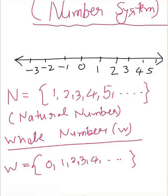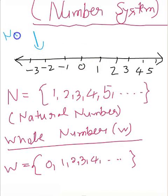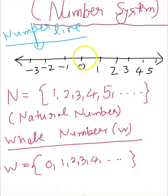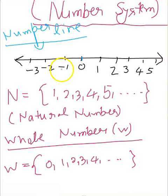You have all heard about the number line. If we write all the integers on the number line, we can place all the integers including negative and positive. Starting from 0, then 1, 2, 3, 4, and so on up to infinity, and similarly the negative integers: minus 1, minus 2, minus 3, and so on up to minus infinity.